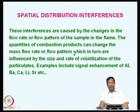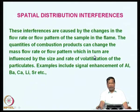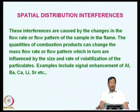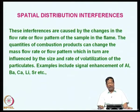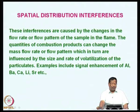There are other types of interferences: spatial distribution interferences. These are caused by changes in the flow rate or flow pattern of the sample in the flame. The quantities of combustion products can change the mass flow rate or flow pattern, which in turn are influenced by the size and rate of volatilization of the particulates. Examples include signal enhancement of aluminum, barium, calcium, lithium, and strontium.